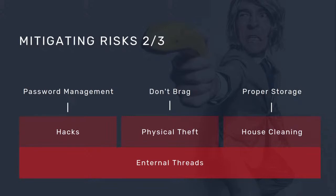Then there's physical theft — someone knows you have crypto and comes to find it. The best protection is just not to talk too much about it. If they don't know you have it or that you have a backup somewhere, then no one knows to look for it. Also, depending on who is in the household, ensure you store backups and keys in a proper place so that someone won't accidentally throw them in the trash thinking they were just an unimportant piece of paper.